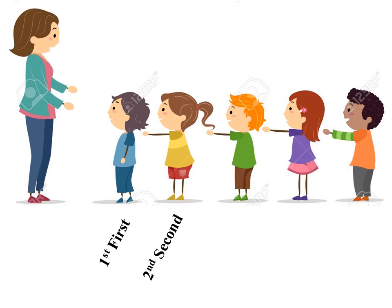After the girl, who is standing? A boy is standing. Now count the position: one, two, three. We should not say three in ordinal numbers — we say the boy is standing in the third position. After the third position, the girl is standing in the fourth position. The boy standing at the last is in the fifth position.